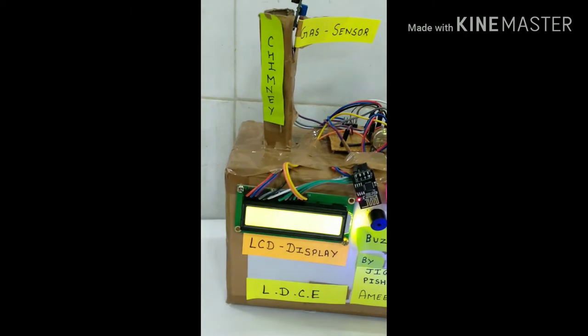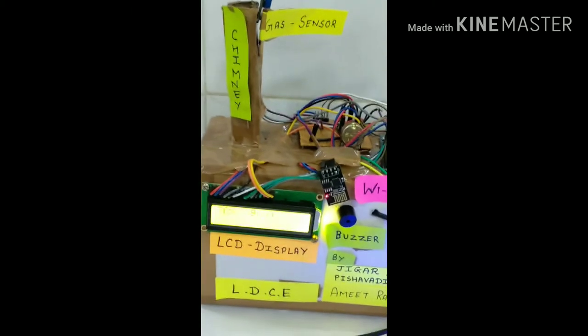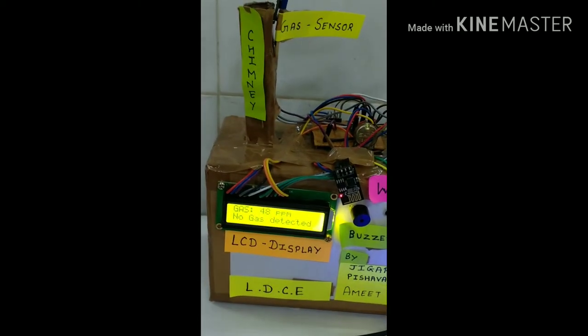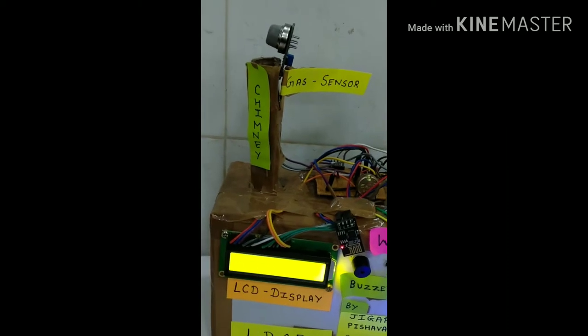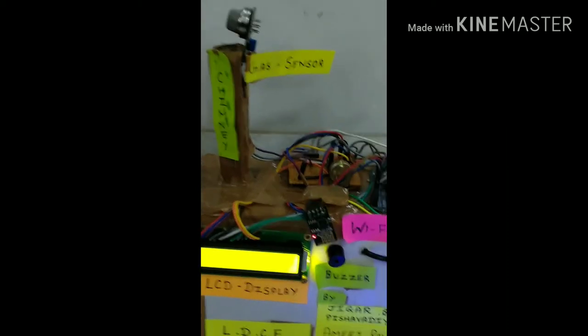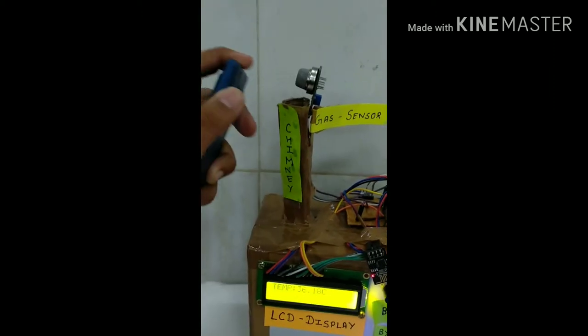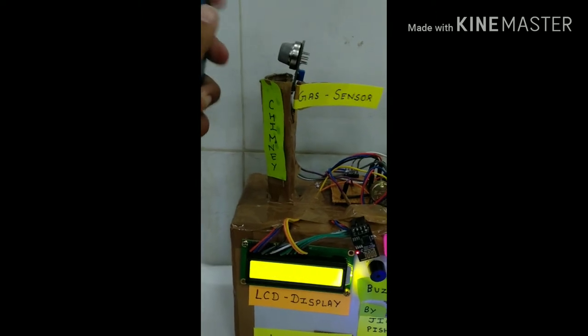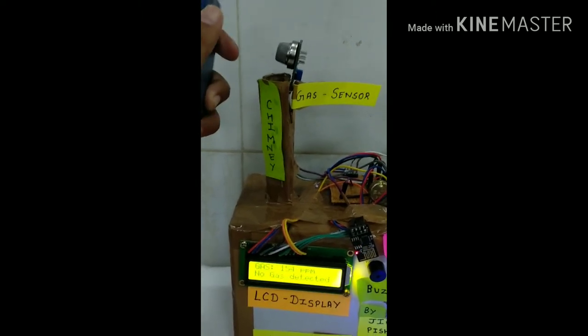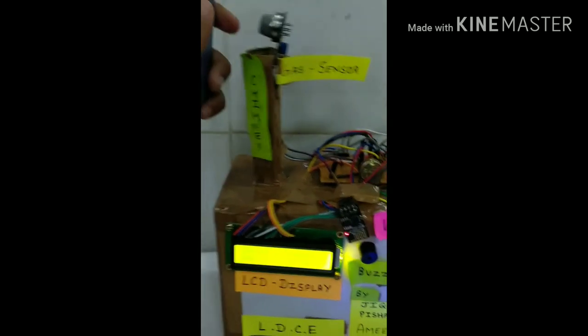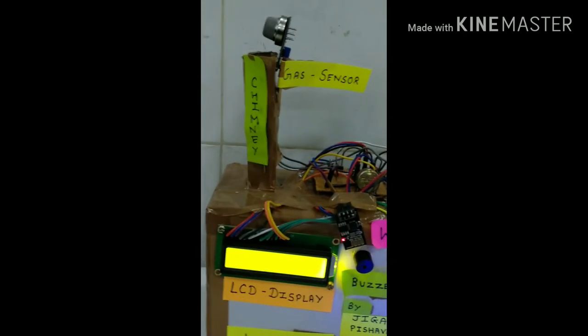Now moving to the working model. Here we have developed a little prototype of the industry where you can see a chimney located above it with gas sensor, also a local LCD display for local monitoring, a buzzer for alerting about the violations of the standards decided by the government. We have also mounted a Wi-Fi module for transmitting this data to the local authorities. The Wi-Fi module has been installed with the IP address of the government websites where they can continuously watch.